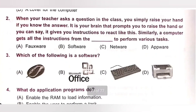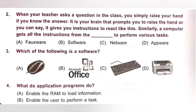Second one. When your teacher asks a question in the class, you simply raise your hand if you know the answer. It is your brain that prompts you to raise the hand — it gives you instruction to react like this. Similarly, a computer gets all the instructions from the dash to perform various tasks. Options: A. Foxware, B. Software, C. Network, D. Appware. A computer gets all the instructions from the software to perform various tasks. Option B is the correct answer.